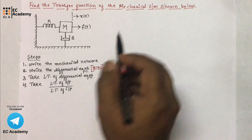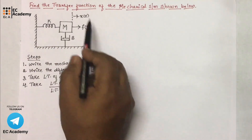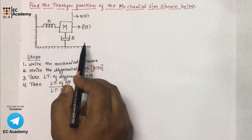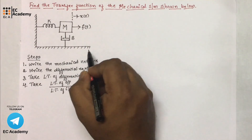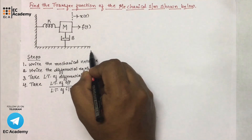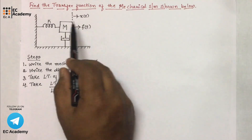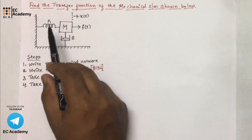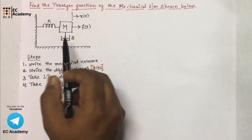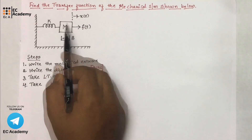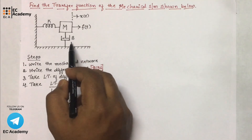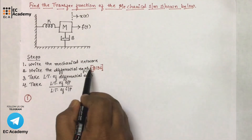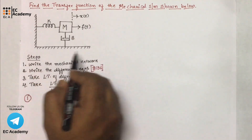Before writing the transfer function, we need to know whether the given mechanical system is a translational system or a rotational system. By observing this system, we can understand that it is a translational system because there are no rotational elements here. So all elements in this system are elements of the translational system. Now let us follow the steps and write the mechanical network for the given mechanical system.